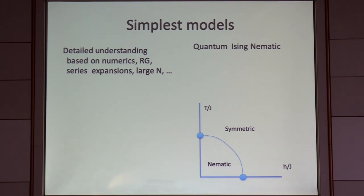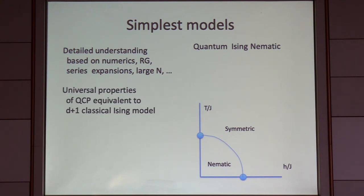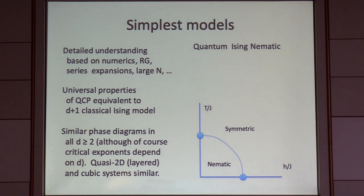This problem is really solved — there is detailed understanding based on numerics, RG, and series expansion. We know the universal properties of the quantum critical point are exactly those of the D+1 dimensional classical Ising model on the same lattice. One important thing to note is that although critical exponents depend on dimension, this phase diagram is what you'll get regardless of dimension, so long as the dimension is greater than or equal to 2.